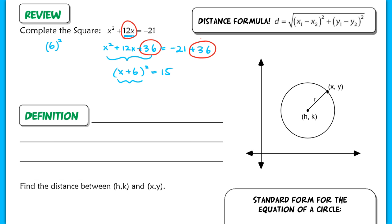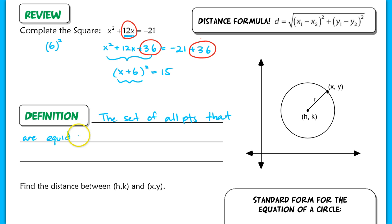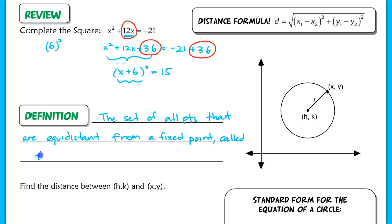Now we can move on to the definition of a circle. A circle is not just something that's round and two-dimensional — it has a formal definition. A circle is the set of all points that are equidistant — meaning equal distance away — from a fixed point, meaning that point should not move. We call it the center.